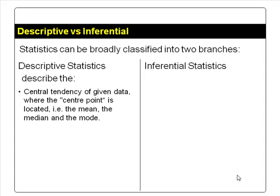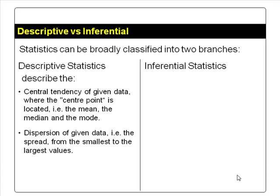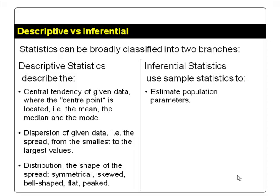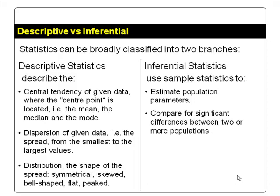Descriptive statistics describe three things about the given data. One, the central tendency — where the center point is located, usually described by the mean, the median, and the mode. Two, the dispersion or spread of the data — how close together or how far apart the data are, from the smallest to the largest values. Three, the shape of the distribution — whether it is symmetrical or skewed to the right or left, and whether the spread is bell-shaped, flat, or sharply peaked. Inferential statistics use sample statistics to estimate population parameters, compare significant differences between two or more population parameters, and test for relationships between variables and make predictions.